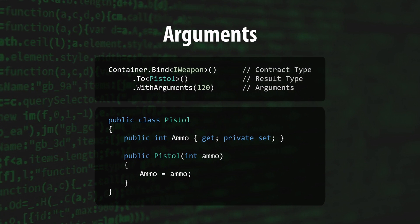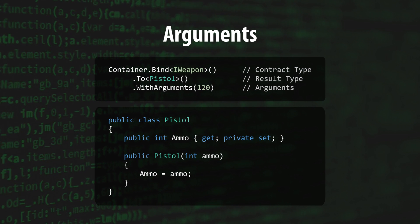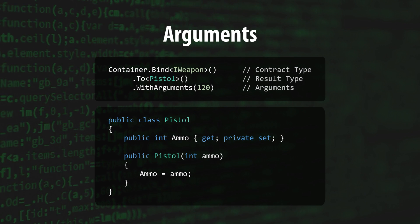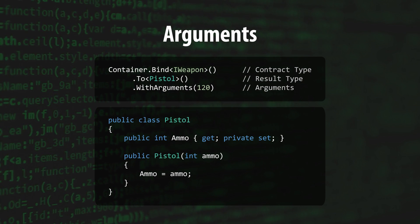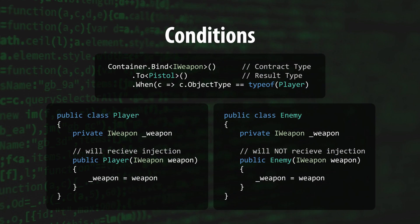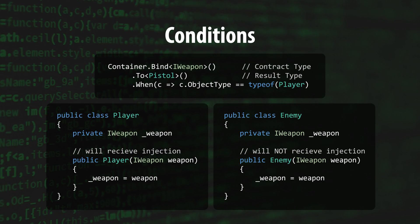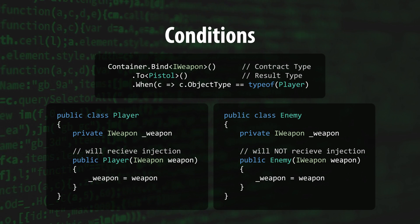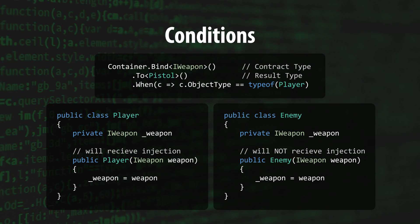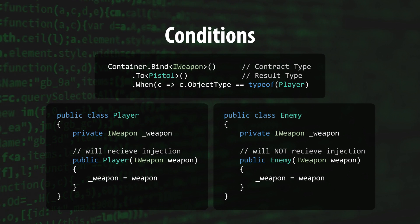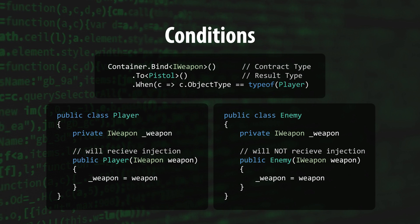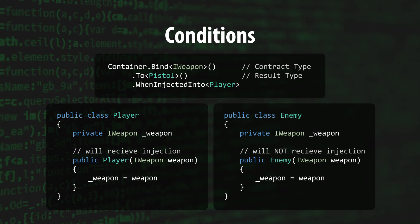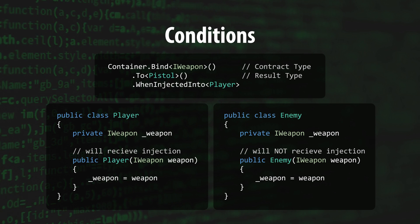The Arguments method allows you to pass your own values into result type's constructor. While you'll generally create separate binding statements for all these arguments, it can sometimes be easier to just inject your own values. The When method allows you to define conditions for binding statements that restrict when they're used for injections — if the condition is true for the class requesting the object, then the injection will take place; otherwise it'll be ignored. The WhenInjectedInto method is a helper method that lets you explicitly define which classes each of your binding statements are meant for.